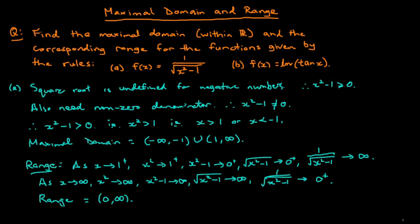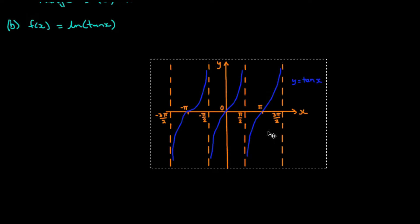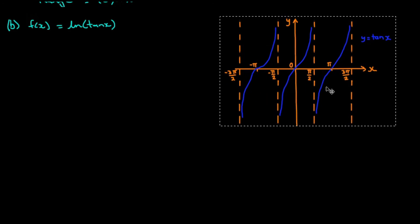Okay, let's look at part b now. Let's start by rewriting our function rule, which is f of x equals the natural log of tan x. Now for tan x, it'll help to have a look at the graph of that function. So I drew one a little earlier. I'll just pop that up there.